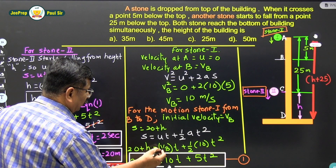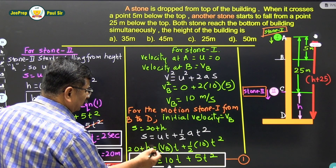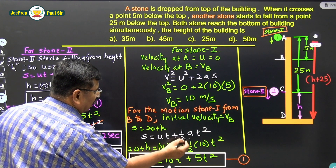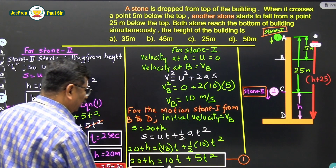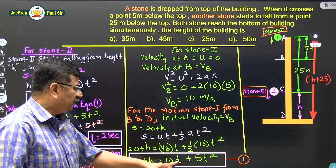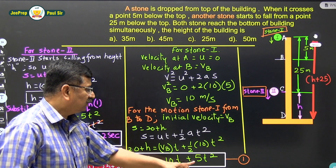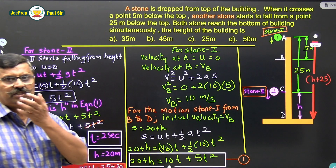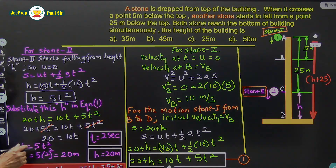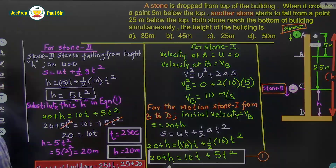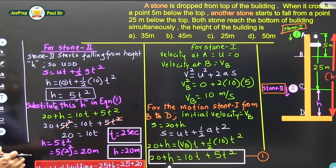Since s = 20 + h, we get: 20 + h = vB × t + ½ × 10 × t², which gives 20 + h = 10t + 5t². This is equation number one.